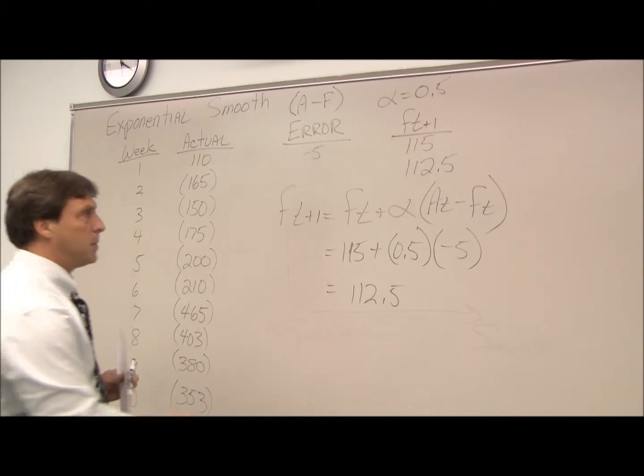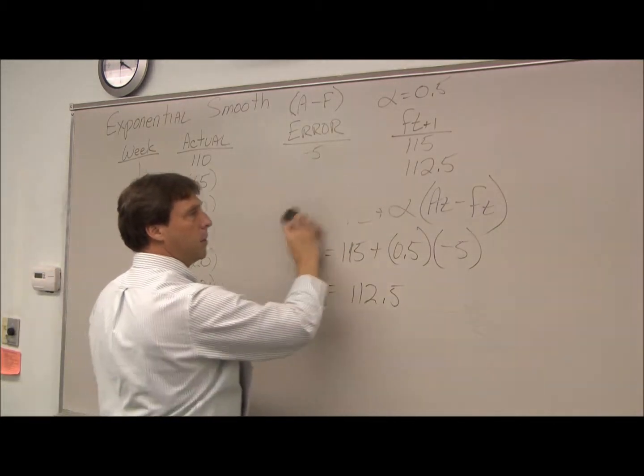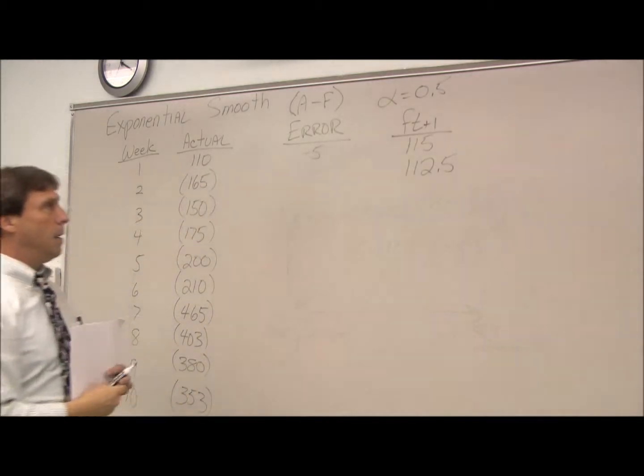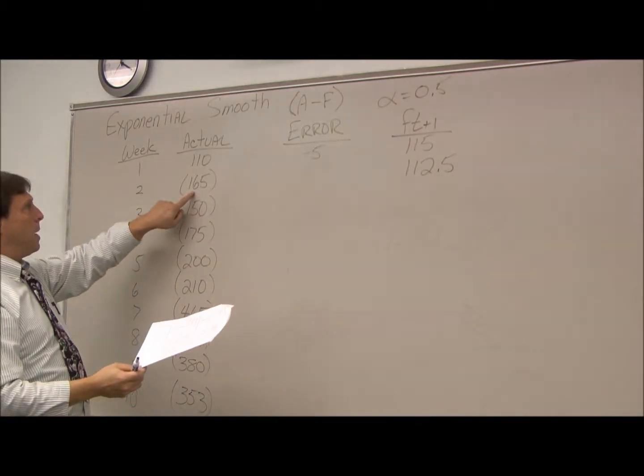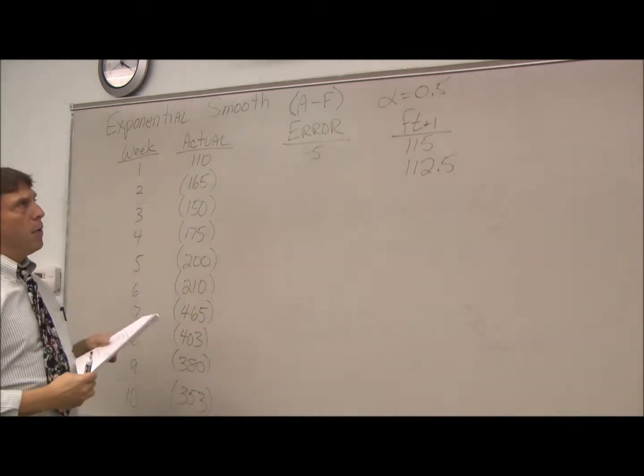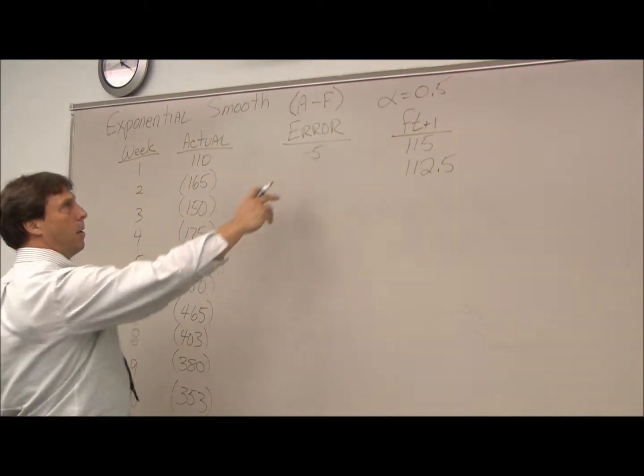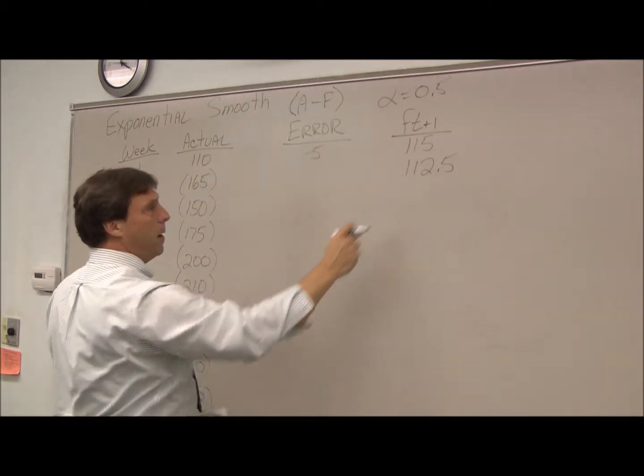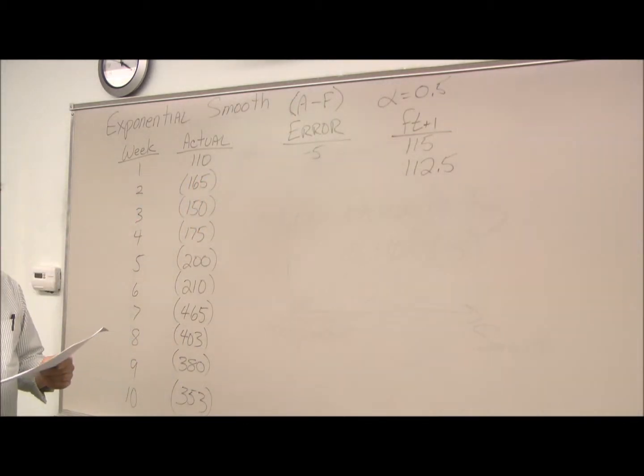Now that we have 2 in, we can make believe week 2 actually happened. So again we go and calculate the error. The error is our A minus F, or 165 minus our 112.5, so my error becomes 52.5.